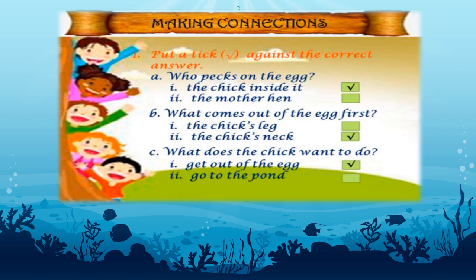What does the chick want to do? The options given are: get out of the egg, or go to the pond. This poem is all about the struggle of a chick who wants to come out of the egg. So the correct answer is get out of the egg. You have to put a tick against the first option: get out of the egg.